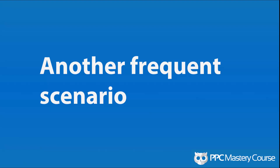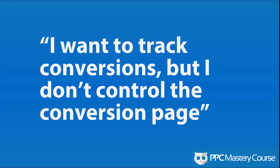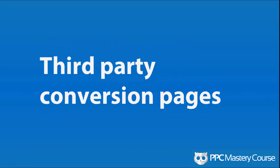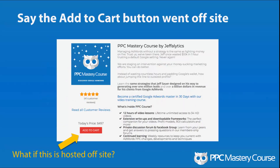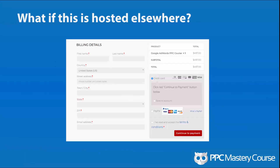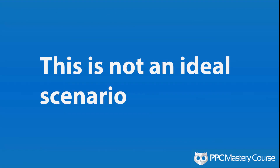There's another frequent advanced conversion tracking scenario: tracking conversions when you don't have control of the conversion page. This usually happens with third-party conversion pages. For example, here's my PPC Course product page — what if my cart were hosted off-site? If you click 'Add to Cart,' you'd go to a third-party site and need to put conversion tracking there. But you might not have control of that third-party cart, which is not an ideal scenario.